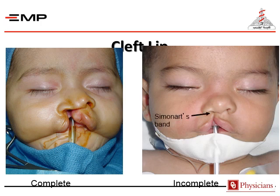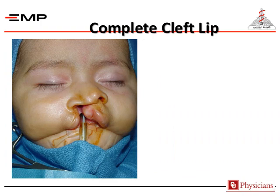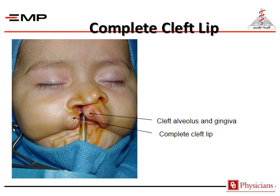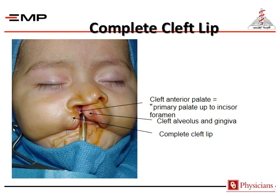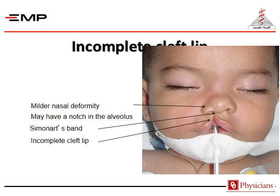Here is an incomplete cleft lip where we have a Simonart's band, and here we have a complete cleft lip as shown by the arrow, with cleft alveolus and gingiva as well, cleft of the anterior palate — primary palate up to the incisive foramen — and severe nasal deformity. Here's a case of incomplete cleft lip with milder nasal deformity; may have a notch in the alveolus.